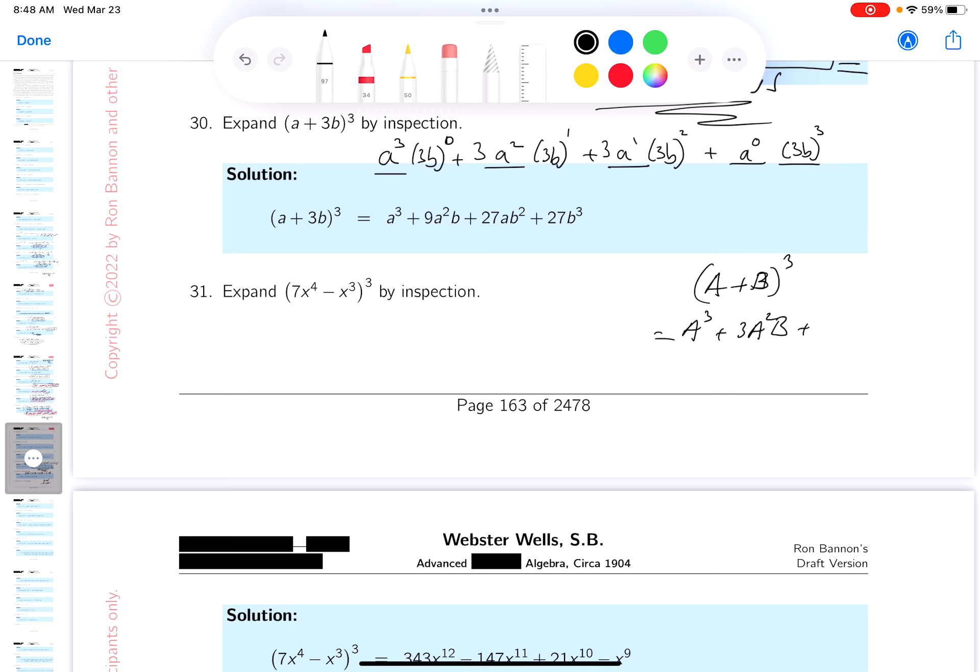...B plus 3a—that doesn't look like a 3, does it?—3aB² plus B³. That's all we did.